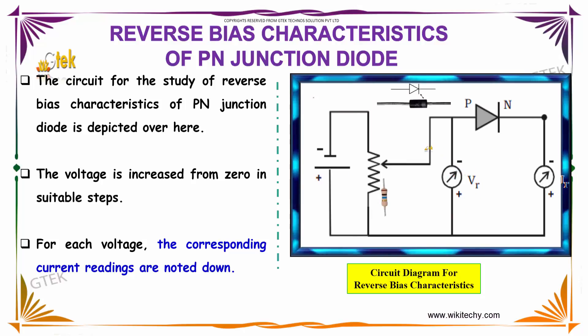The voltage is increased from zero in suitable steps. For each voltage, the corresponding current readings are noted down. You can see the PN junction diode is connected with P to negative and N to positive.